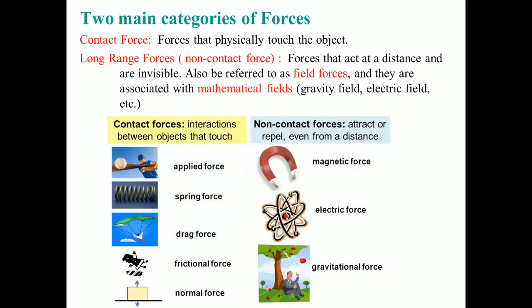There are two major types of forces. Contact forces are when you physically touch the object — things like the applied force, the spring force, the frictional force, and the normal force. The drag force you experience while in contact with air, but you won't have many questions on drag. Long-range forces are forces that act over a distance. Mathematically, we talk about these as fields because they are calculated with a field equation. They have inverse relationships. The ones we deal with in this class are the gravitational force and the electric force, or the electric field and the gravitational field.